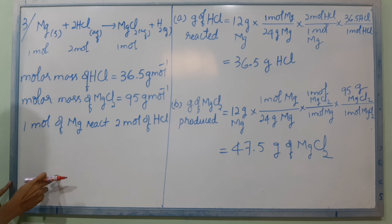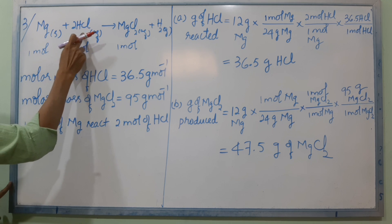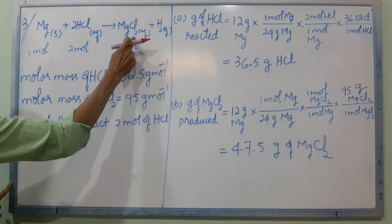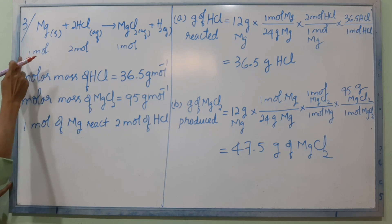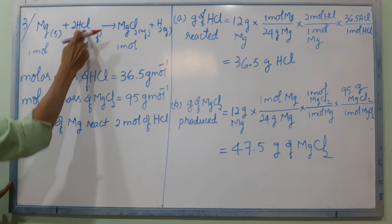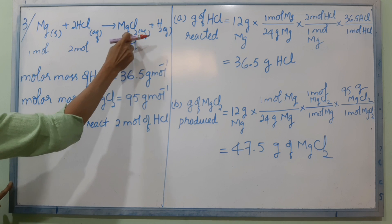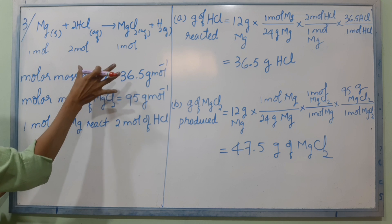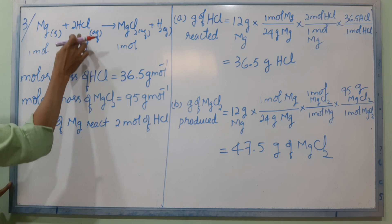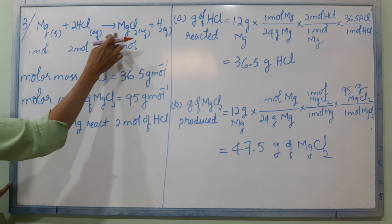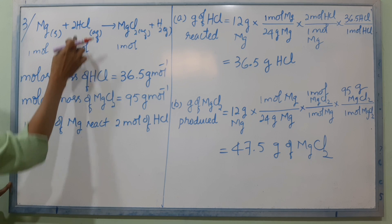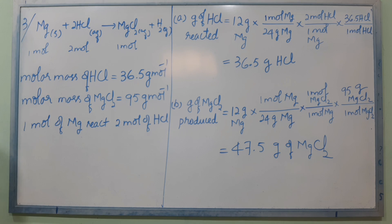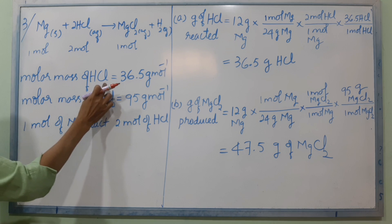First, we have to look for the equation. The molar mass of HCl: H is 1, Cl is 35.5, giving 36.5 grams per mole. Molar mass of Mg is 24, molar mass of MgCl2 is 95.